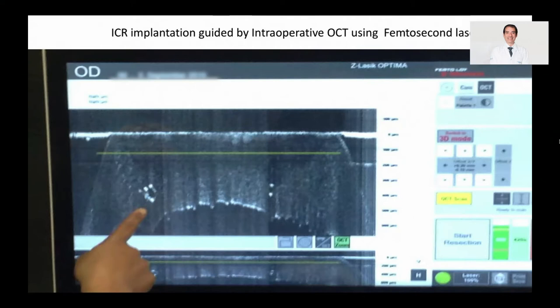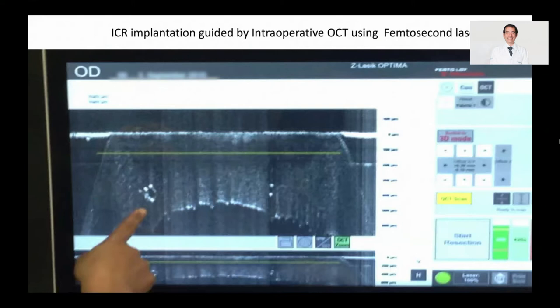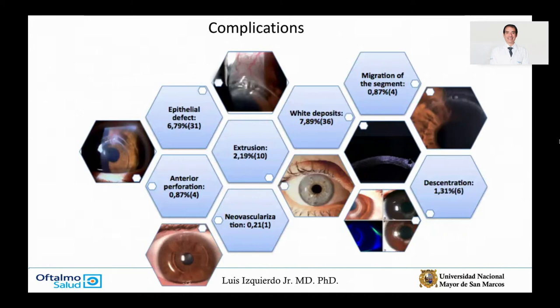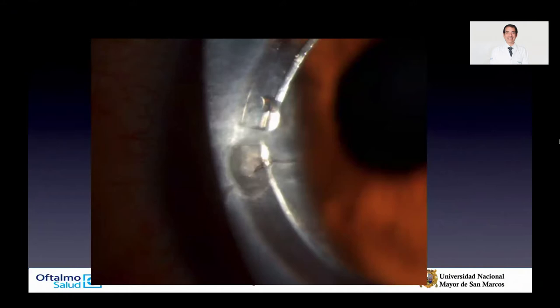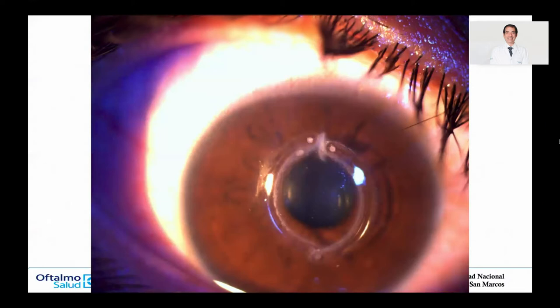Of course, we can have complications even with the femtosecond laser. The main complications reported for intracorneal ring segment surgery are extrusion and poor refractive outcomes. Extrusion and migration can happen — horrible cases exist. Can we avoid or improve this? With the SIMR femtosecond laser, you can use a new approach: two separate incisions that are not perpendicular but bent. This prevents migration because the non-perpendicular femto cut avoids easy ring extrusion.